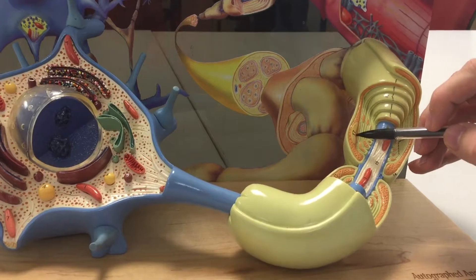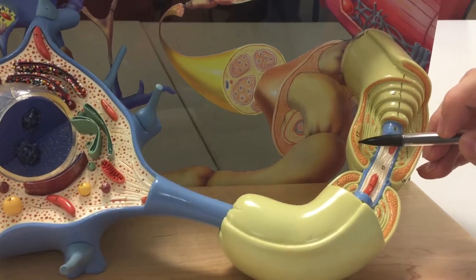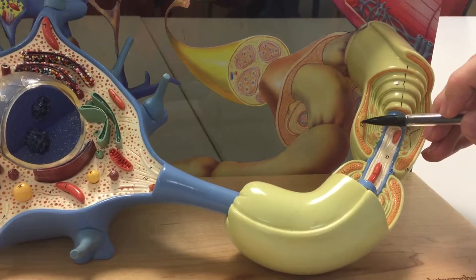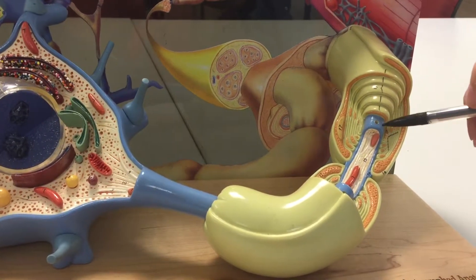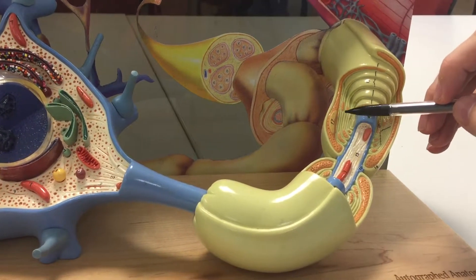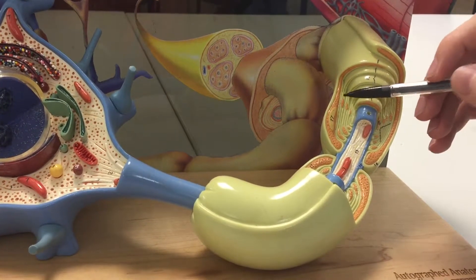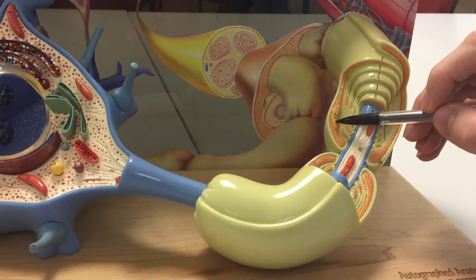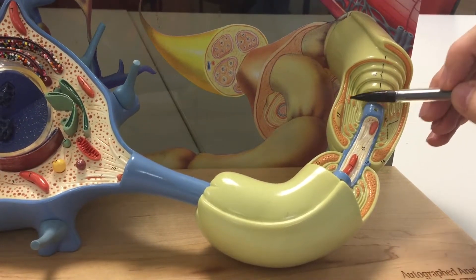This structure here which is labeled number 17, I hope you can see that. That's the nucleus of the cell that's responsible for making the myelin and that cell in the peripheral nervous system, which we're looking at here, is the Schwann cell. So this structure again would be the nucleus of the Schwann cell.